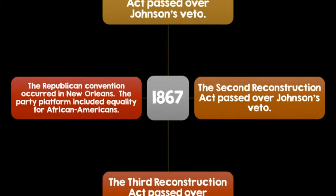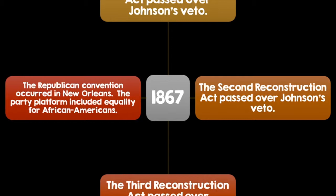In 1867, the first, second, and third Reconstruction Acts passed over Johnson's veto. The Republican Convention occurred in New Orleans, and the party platform included equality for African Americans.